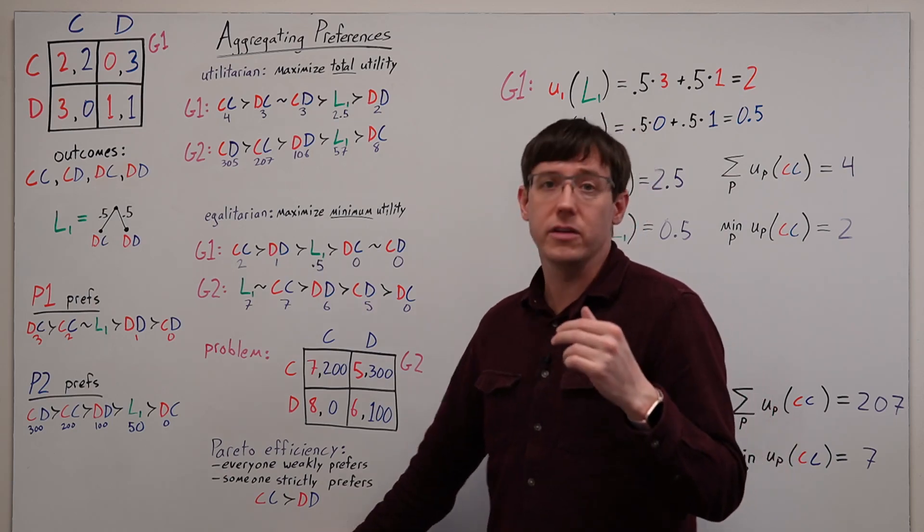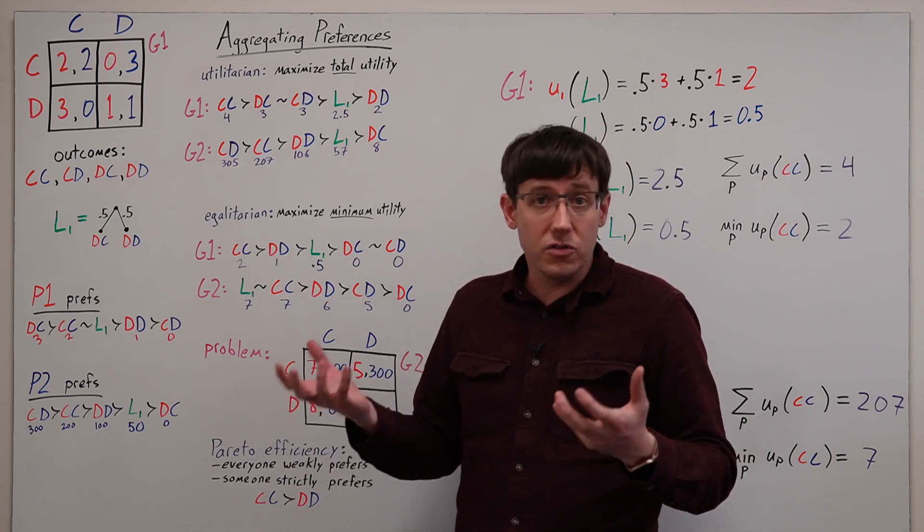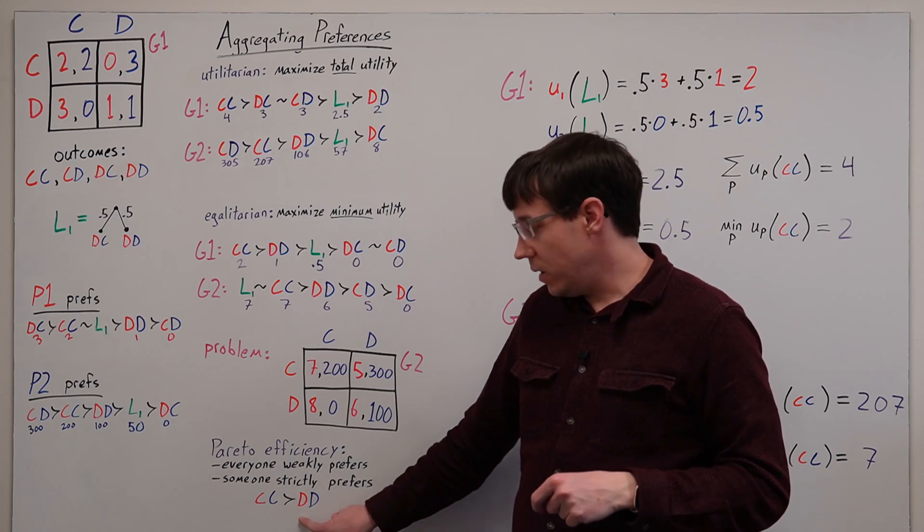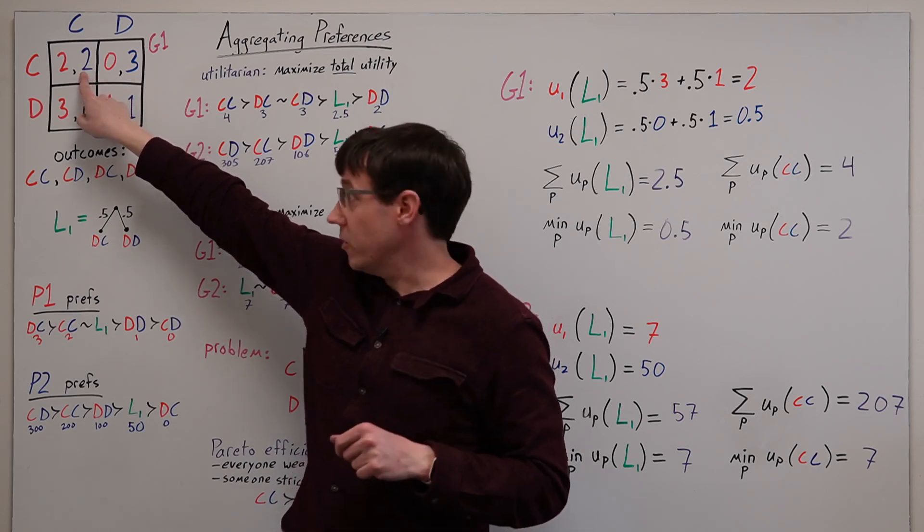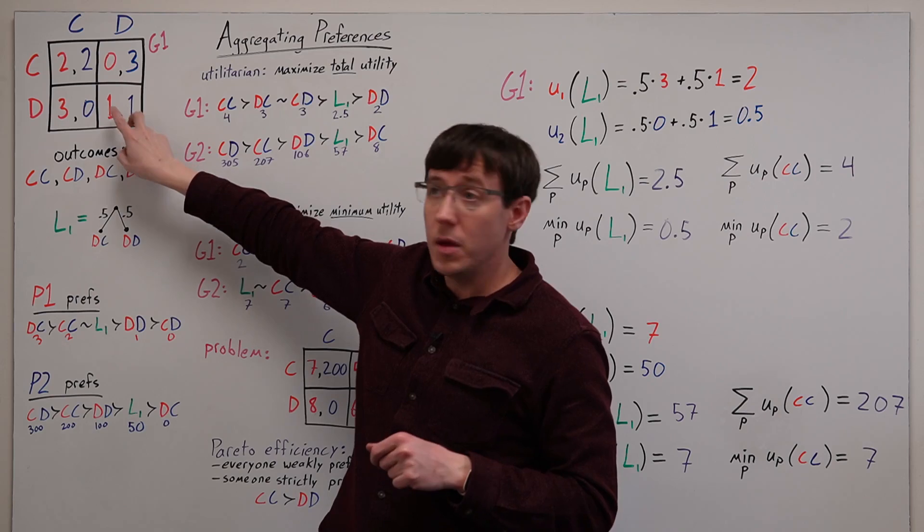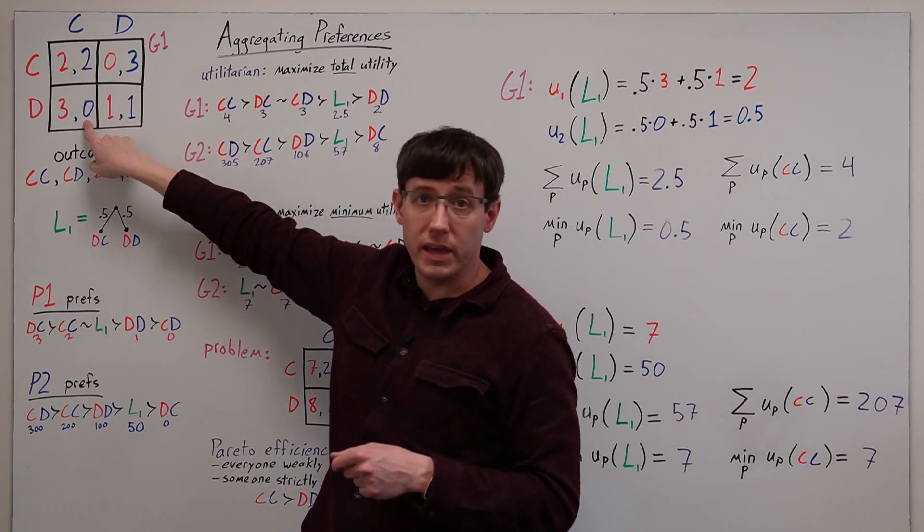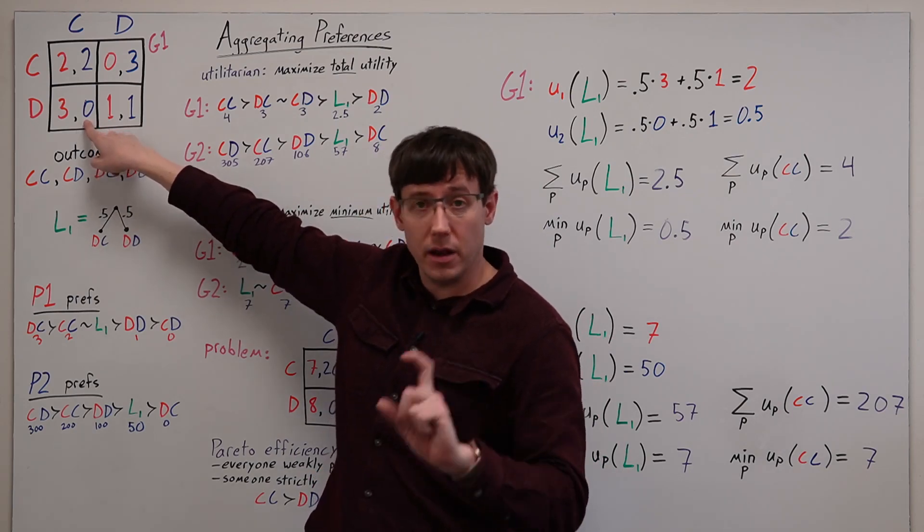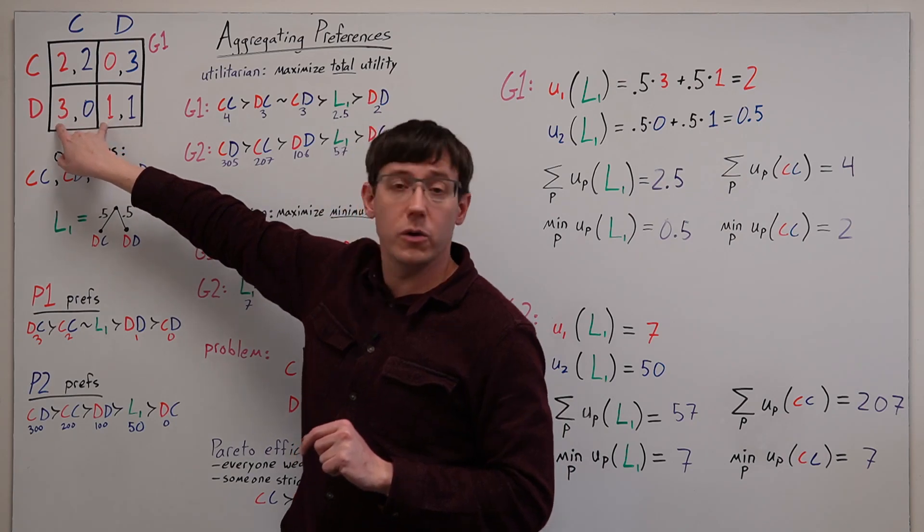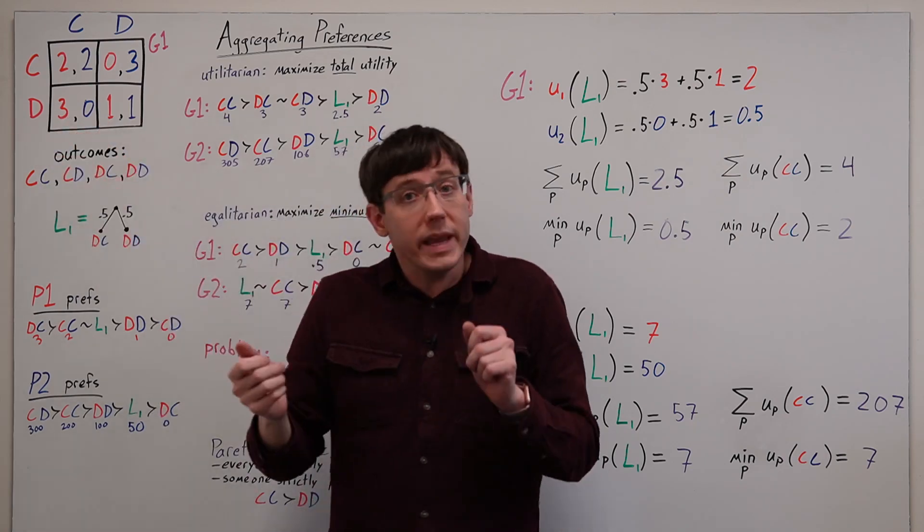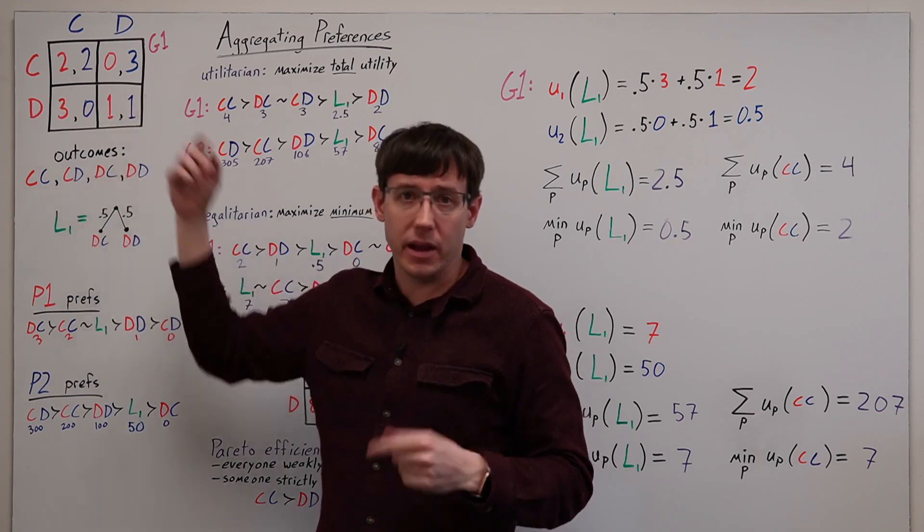So somebody has to actively want that outcome because it gives them a higher utility. So what sorts of comparisons does this let us make? Well, we can say that the outcome where both cooperate is better by the Pareto criterion than the outcome where they both defect because both players are better off. But if we compare to either of the outcomes where one player cooperated and the other defected, there's one player whose utility has gotten worse and one player whose utility has gotten better. And so we cannot make a Pareto comparison between them because the players would disagree about the ranking of these outcomes.